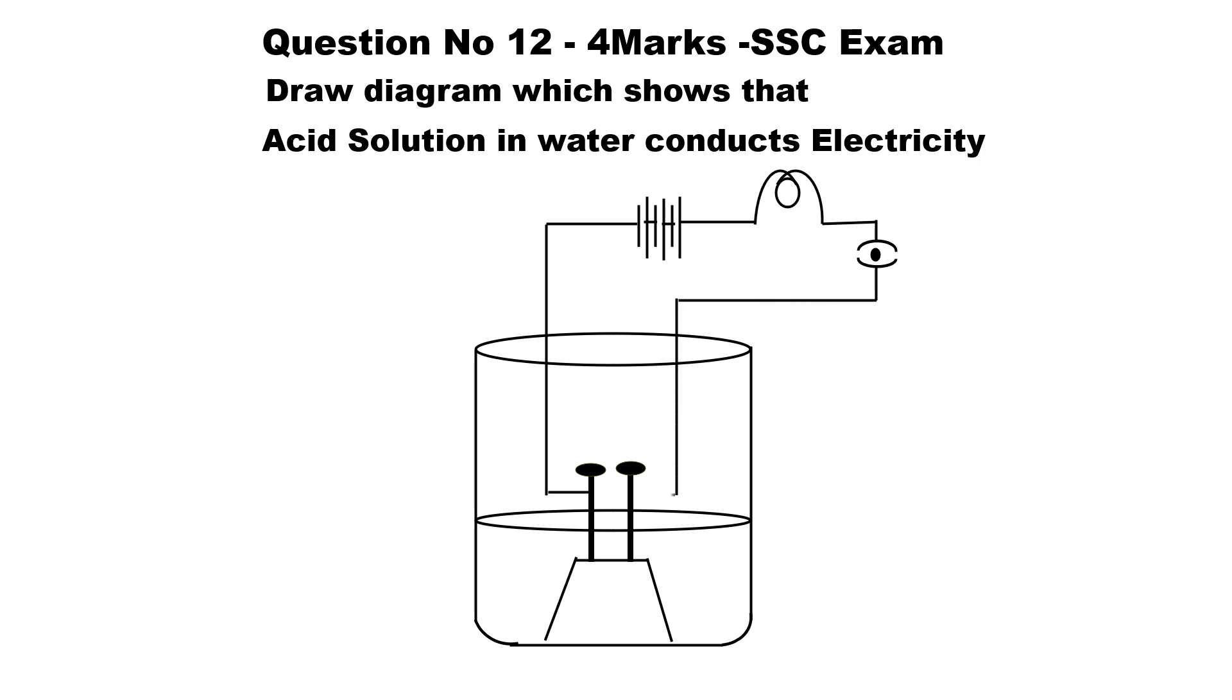Diagram is completed. Now, labeling the parts. Observe carefully and note down. This is bulb, Switch, Nails, Dilute HCL solution, Rubber Cork, 6V battery.